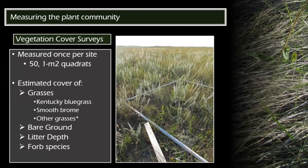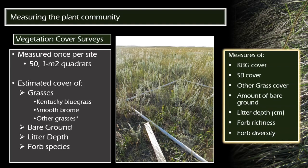For the plant side, we did vegetation cover surveys in 5-by-1 meter square quadrants per site, conducted after July 1st when growth had started. We estimated the cover of three different grass groups: Kentucky bluegrass, smooth brome, and 'other grasses,' which mostly represents native grass species but also includes other exotic grass species that aren't Kentucky bluegrass or smooth brome. We also estimated bare ground, measured litter depth, and estimated the cover of each forb species in the quadrat, giving us measures of grass cover, bare ground, litter depth, and forb richness and diversity values.